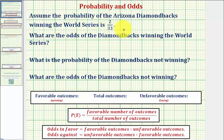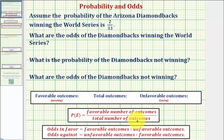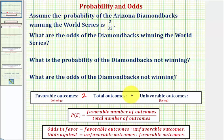Assume the probability of the Arizona Diamondbacks winning the World Series is two thirty-thirds, or 2 divided by 33. The probability of an event compares the favorable number of outcomes to the total number of outcomes. So this is telling us there are two chances out of a total of 33 chances that the Diamondbacks will win the World Series, or two favorable outcomes out of a total of 33 outcomes.